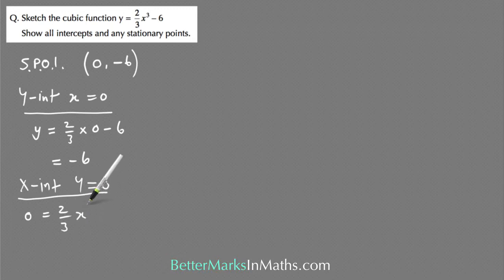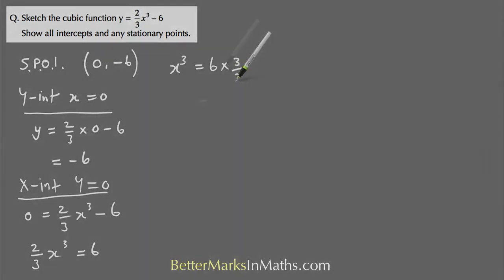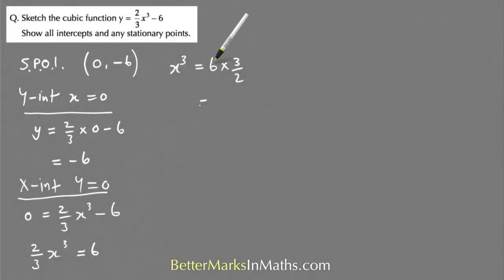X-intercept: let y equals zero. So zero equals two thirds x cubed minus six. Add six to both sides to get two thirds x cubed equals six. Then multiply by three over two on both sides. You end up with x cubed equals six times three over two. Six times three is 18 and 18 divided by 2 is 9, so x cubed equals 9.